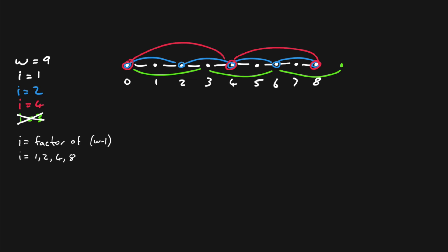If we're using an increment of 1, the number of vertices per line is just equal to the width. But when we increase the increment to 2, we get 5 vertices, and with an increment of 4 that decreases to just 3 vertices. We need a formula: since i must be a factor of width minus 1, let's divide (width minus 1) by i and add 1. So with width 9 and i equals 2: 8 divided by 2 is 4, plus 1 equals 5 — correct. With i equals 4: 8 divided by 4 is 2, plus 1 equals 3 — also correct. So the number of vertices per line equals (width minus 1) divided by i, plus 1.